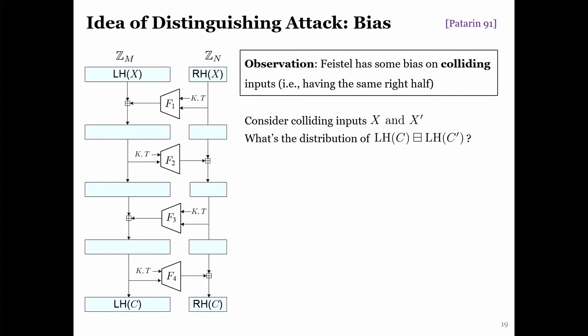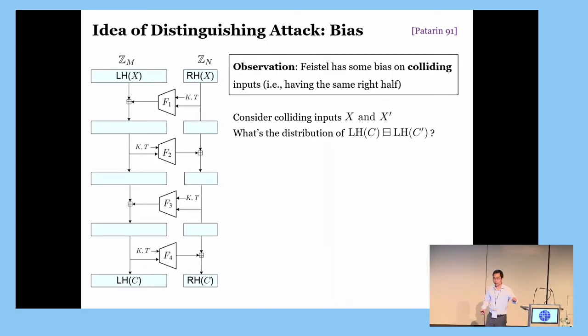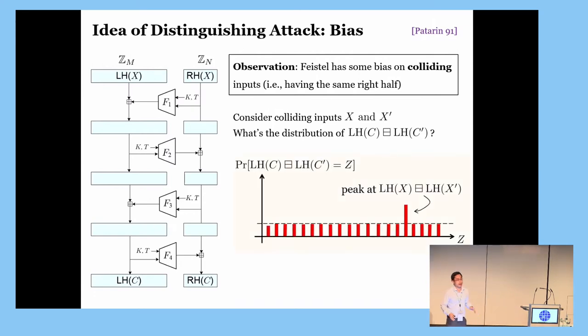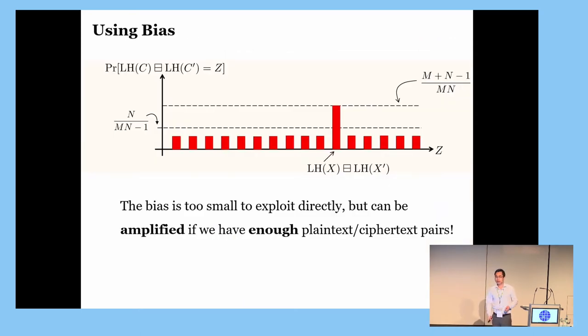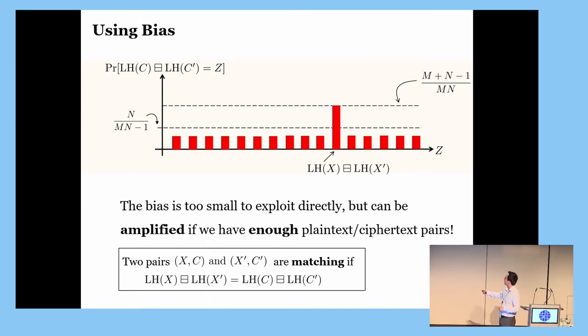So, the key idea of our attack is based on the fact that the Feistel network exhibits some sort of bias when you encrypt inputs of the same left halves. In particular, consider two inputs, X and X-prime, that have the same left halves, and for convenience, let me call it colliding. So, let's now encrypt them under a four-round Feistel network, and look at the difference on the left halves of the ciphertexts C and C-prime. So, it turns out that the distribution of this one peaks at the point left half of X minus left half of X-prime. The gap between the peak and a uniform mass is too small to exploit directly, but this can be amplified if we have enough plaintext-ciphertext pairs. And for convenience, we will call two pairs X, C and X-prime, C-prime matching if the difference on the left halves of the plaintext is exactly that of the ciphertext.